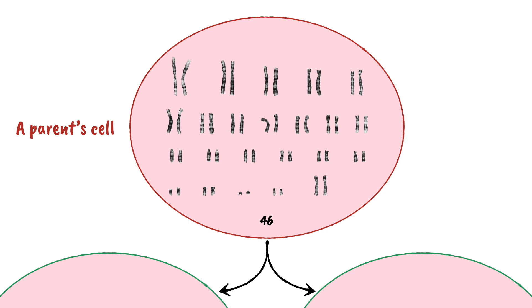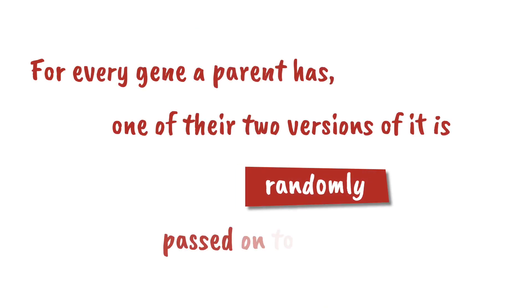When reproductive cells are produced in the parents, exactly which one of the pair of chromosomes will be passed on is random. Remember that chromosomes contain genes. For every gene a parent has, one of their two versions of it is randomly passed on to their child.